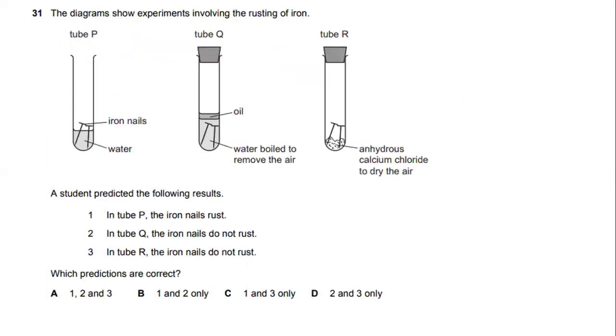The diagram shows an experiment involving the rusting of iron. A student predicted the following results. In tube 1, the iron nails rust, where you have iron nails and water. In tube 2, the iron nails do not rust.